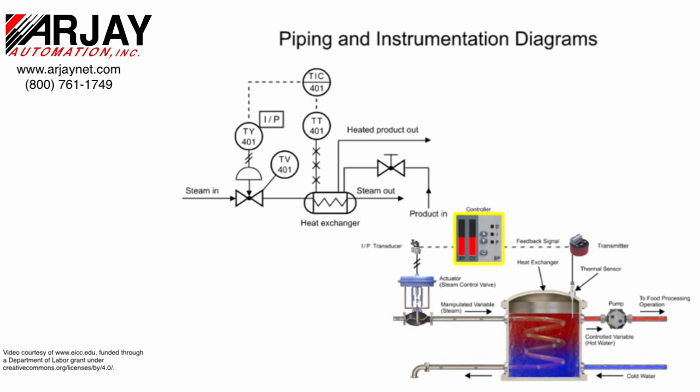The controller and indicator is the instrument where the transmitter sends an electrical signal and is shown in the functional identifier at the second and third letters, I and C. Balloons with a solid dividing line indicates that the instrument is board mounted.